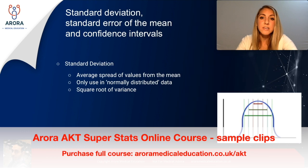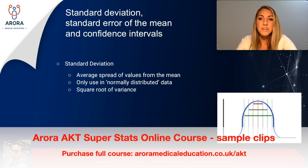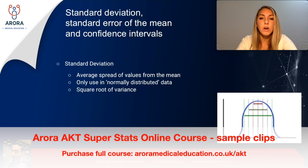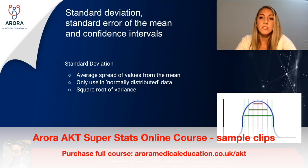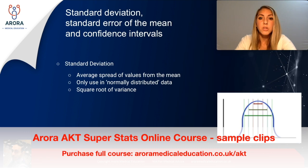You only use standard deviation in a normally distributed data set, so any question about standard deviation in a skewed data set is not really valid. The standard deviation is the square root of the variance. Variance is another measure describing the spread of data from the mean. So standard deviation is the square root of variance, and variance is the square of standard deviation — both describing dispersion from the mean in slightly different ways.